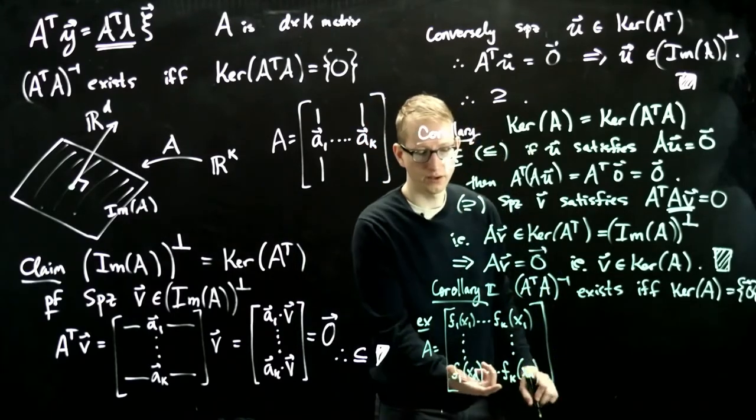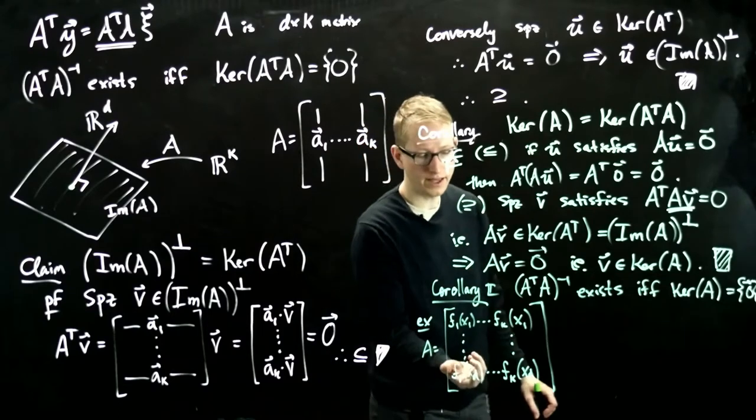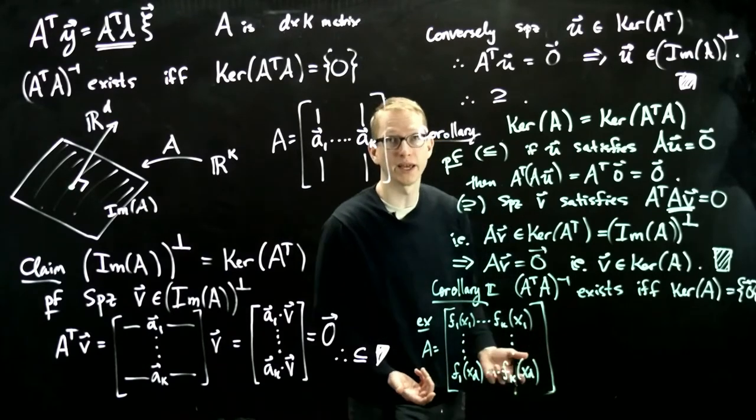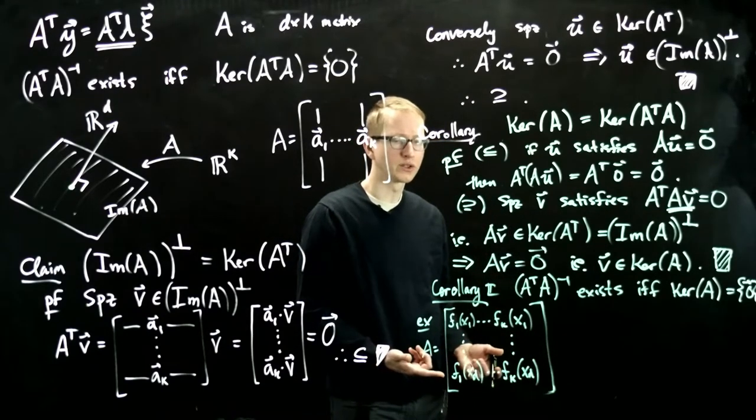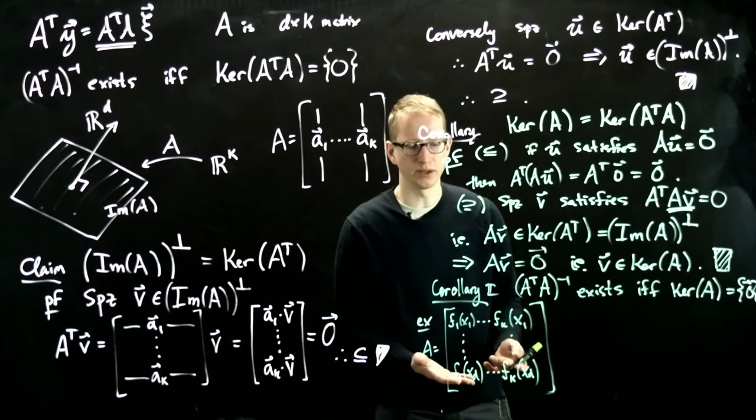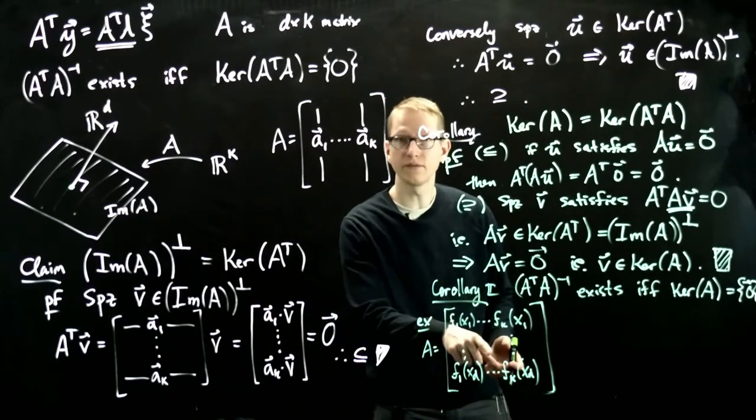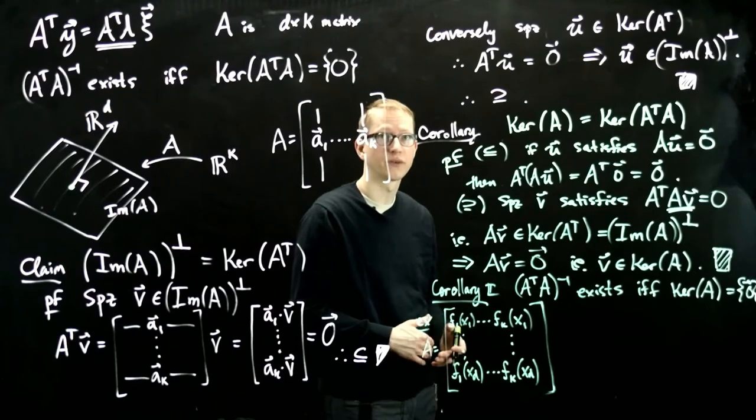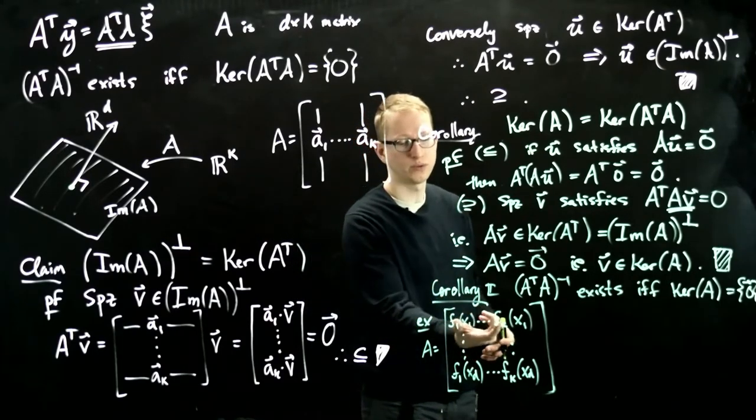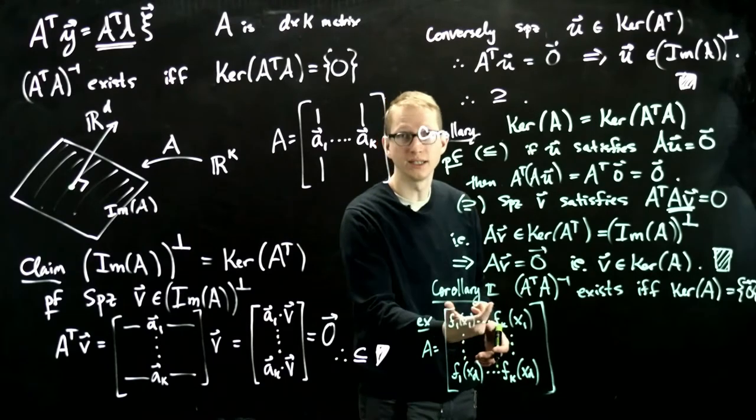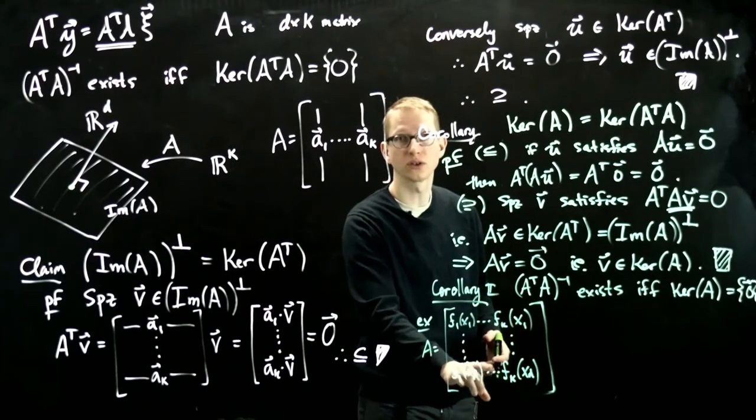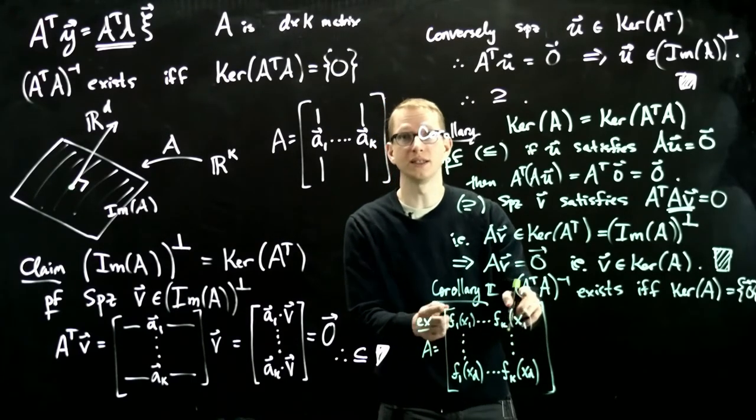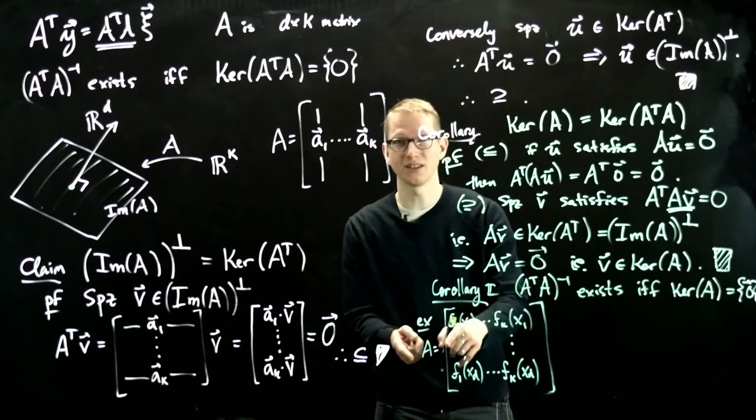And what would it mean for this to have trivial kernel? It would say that all of these vectors, the column vectors, are linearly independent. Is that likely? When might something like that happen? For instance, if one of these functions did depend on the others in a linear way, in the last video we said that we assumed that these functions were linearly independent. If they were dependent, one of these column vectors could be expressed as a linear combination of the others, and therefore these columns would be linearly dependent. And if these are dependent, then this has a non-trivial kernel.